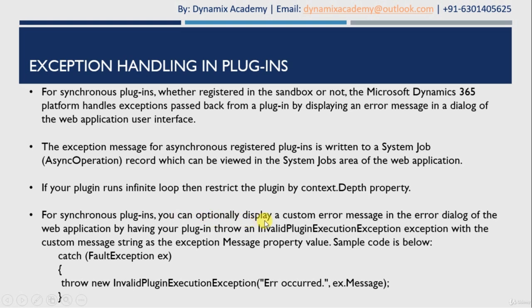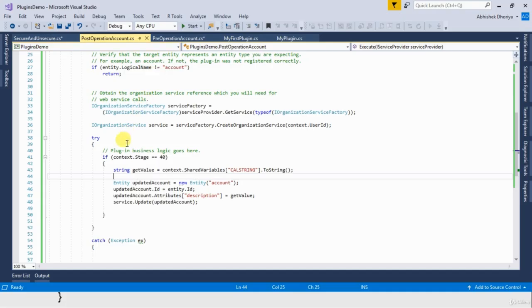For synchronous plugins, you can optionally display a custom error message in the error dialog box of the web application by having your plugin throw an InvalidPluginExecutionException with the custom message as a string to the message property. If you want to write any custom message to your front-end screen, you need to throw an InvalidPluginExecutionException. Let us see this with the help of an example.